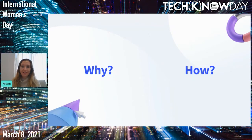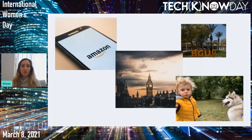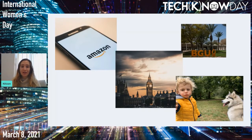Just before we start, let me give a brief introduction of myself. My name is Nitzan, and I work for Amazon as a business intelligence engineer. I'm based in London. I've graduated from Ben Gurion University, a top university in Israel, majored in industrial engineering, and I live with my spouse, my son, and my dog.